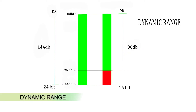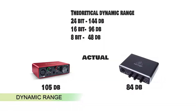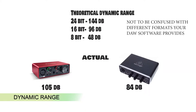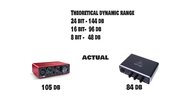Theoretically, the dynamic range of various bit depths are: 24-bit — 144dB, 16-bit — 96dB, 8-bit — 48dB. But in practical situations, the noise floor is further increased by other components of the audio interface. Hence the actual dynamic range values look as follows: a 24-bit Scarlett Solo has 105dB dynamic range, and a 16-bit Behringer UMC22 has 84dB dynamic range.